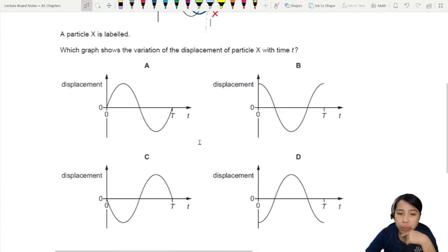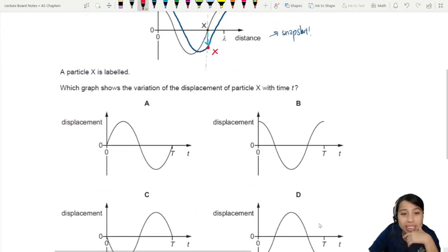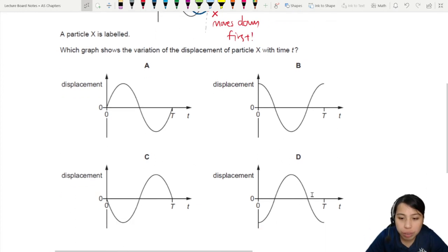That's the first clue. Whatever choice we choose, now all these graphs are in time. We just said that the particle will move down first. So let's write that out: X moves down first. If you look at all the choices of the graph, which one is going down first? C looks okay. A and D are definitely out because you want a particle to move downwards.